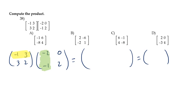I multiply negative 1 by negative 2, which gives 2, plus 3 by negative 1, which is negative 3. Then I multiply the same row (highlighted in yellow) by the other column (in green): negative 1 by 0 is 0, and 3 by 2 is 6.